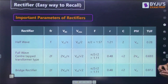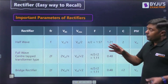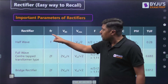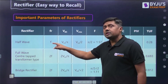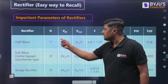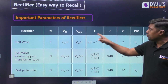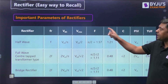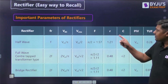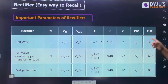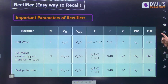For the half wave rectifier: ripple frequency equals supply frequency (50 Hz in India); VDC = Vm/π; VRMS = Vm/2; form factor = 1.57; ripple factor = 1.21; crest factor = 2; PIV = Vm; and TUF = 0.28.